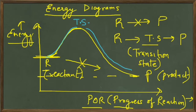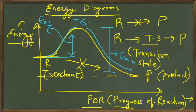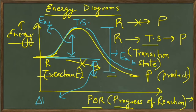The energy required for the reactant to reach the transition state is called the energy of activation for the forward reaction, and similarly we have the energy of activation for the backward reaction. The difference between these two energy levels is known as the enthalpy, or delta H, for the reaction.